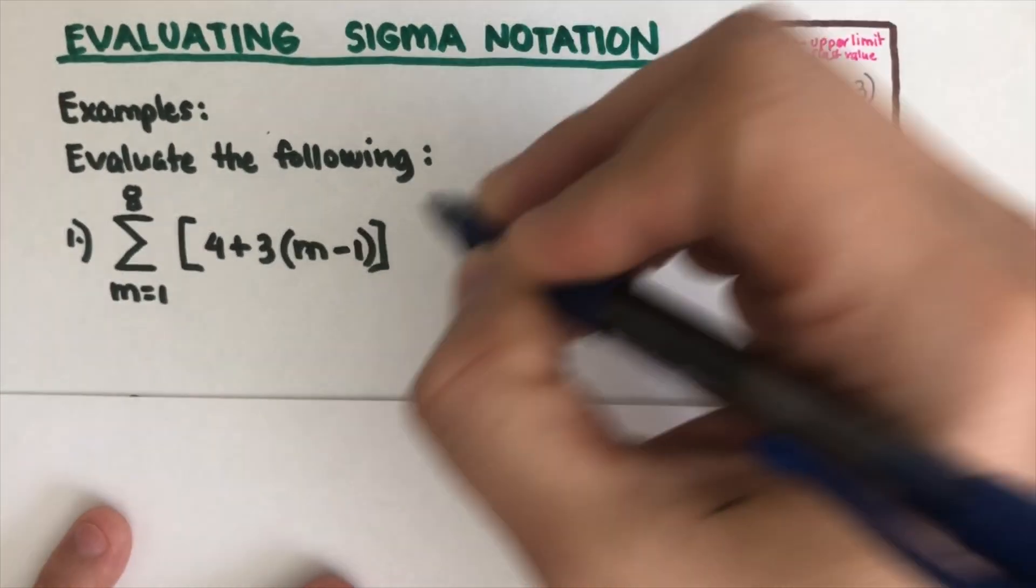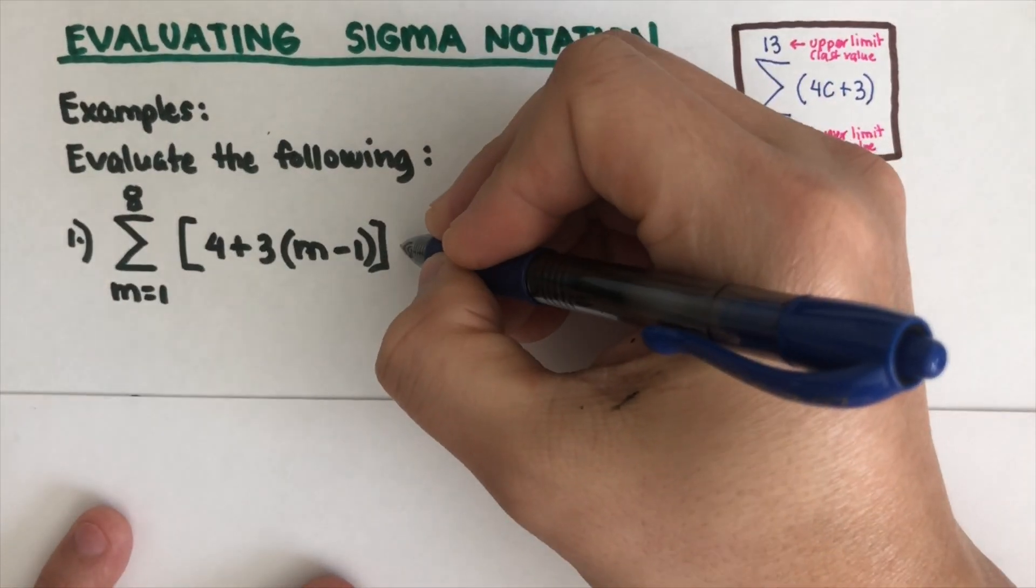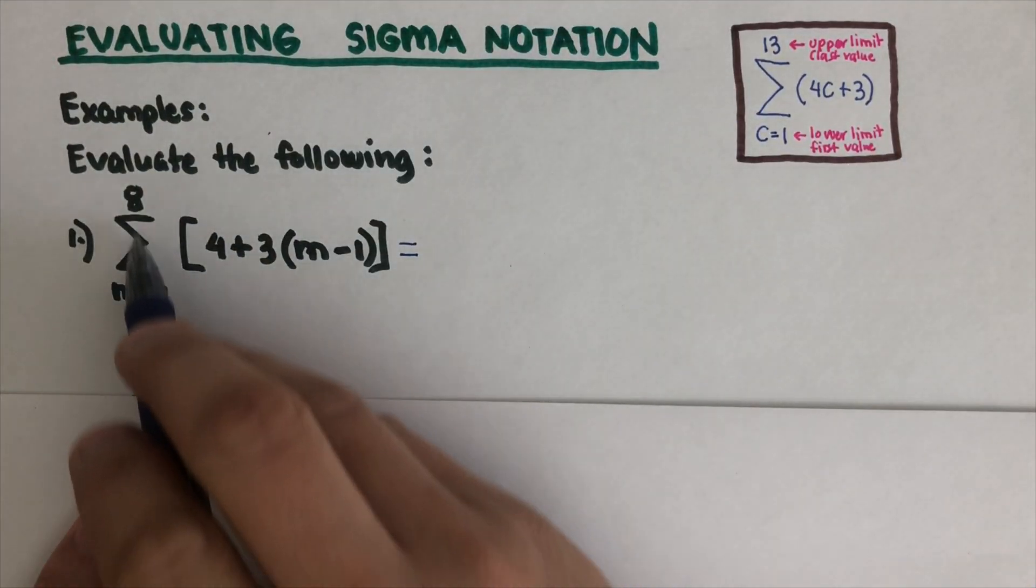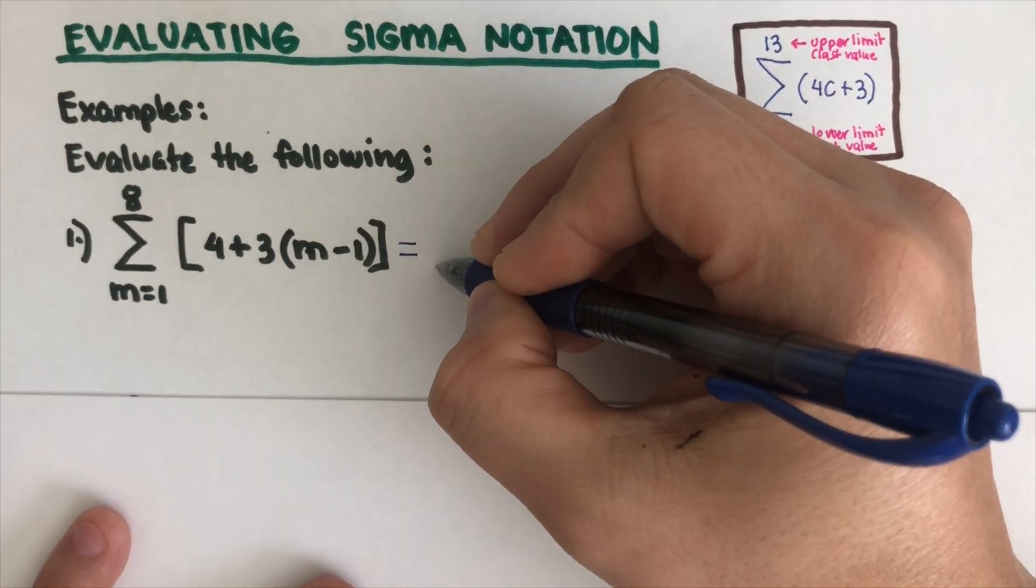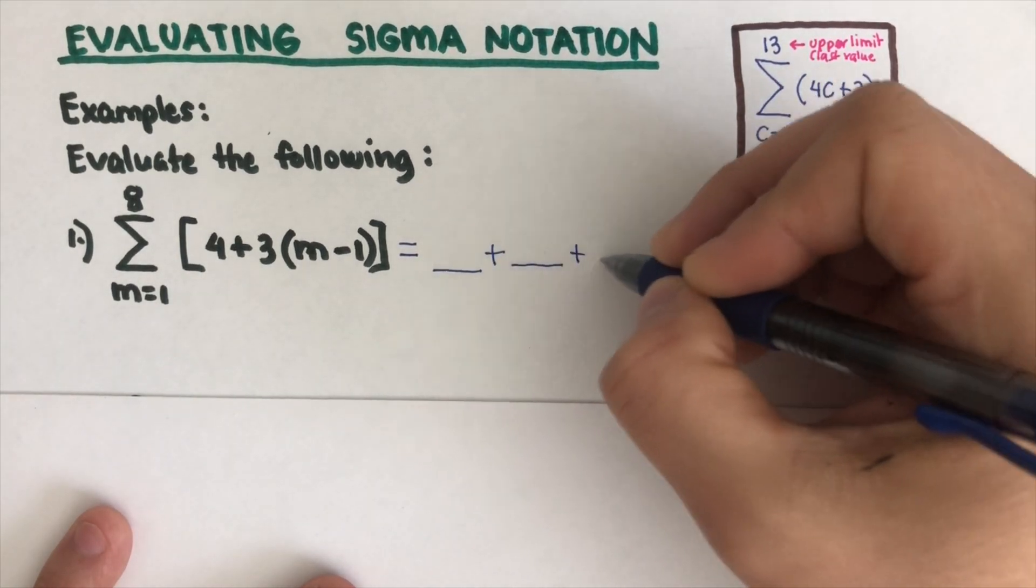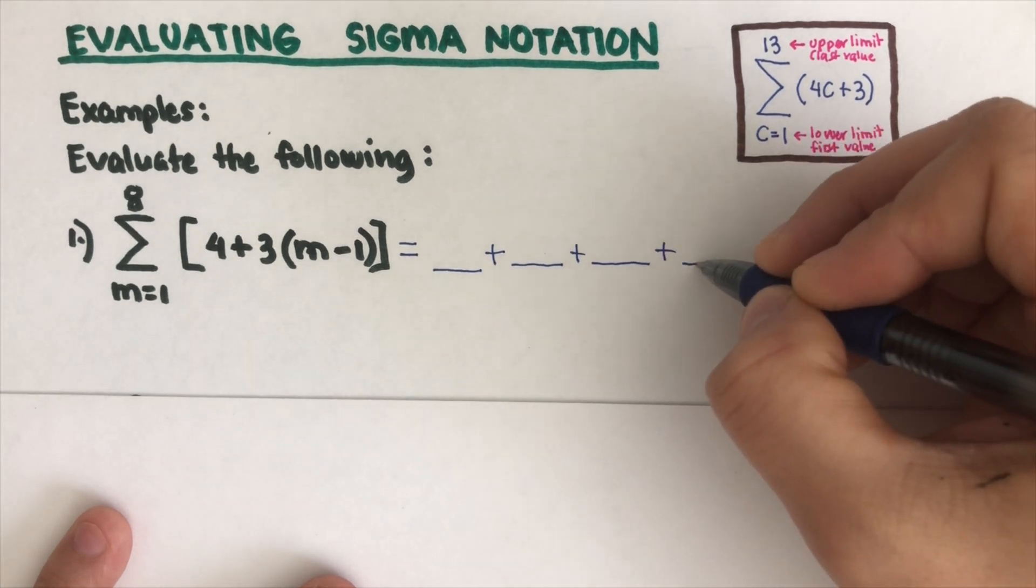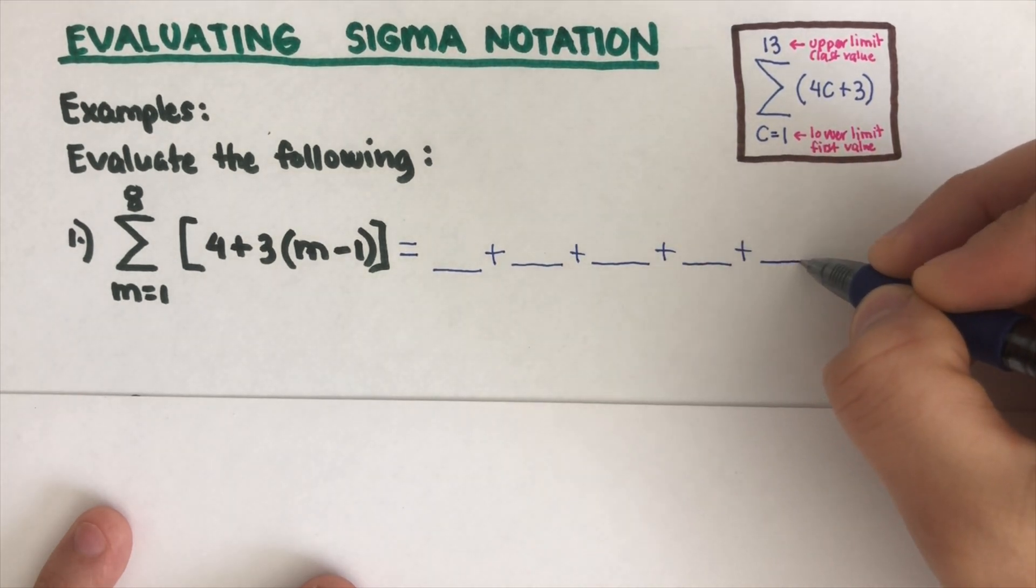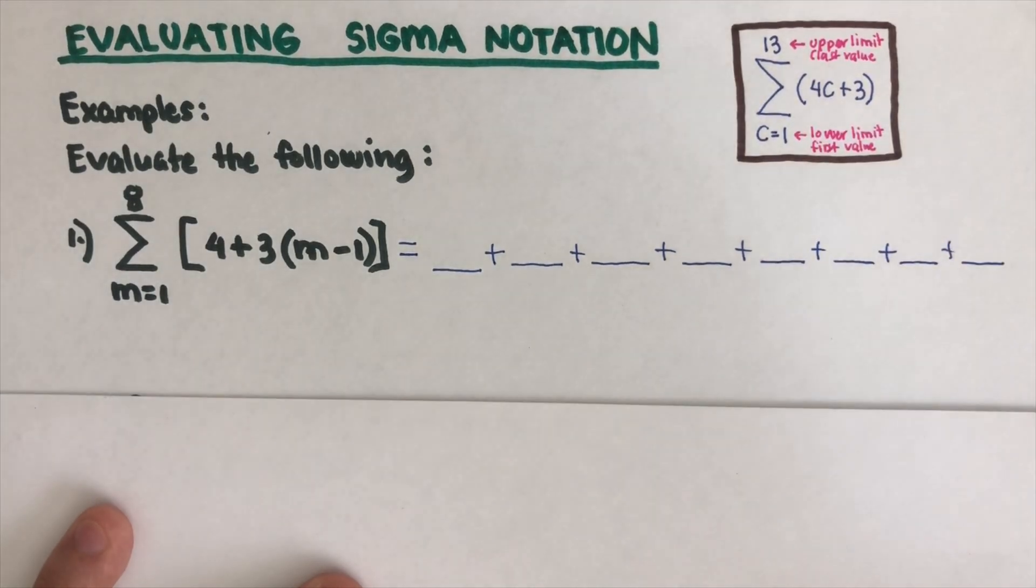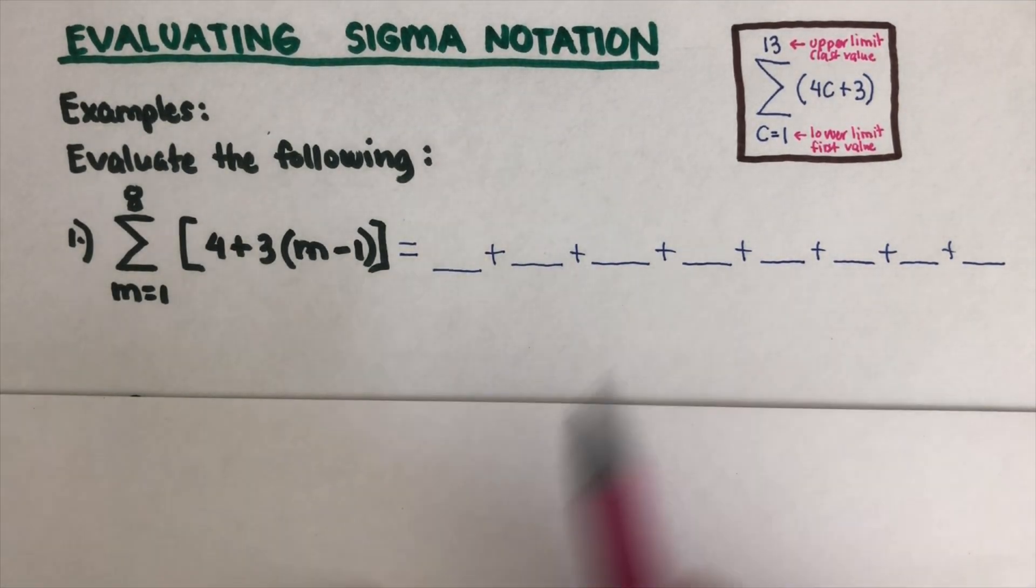To make this more visual, we will put some blanks here. It says that there are eight terms, so I'm going to go ahead and write eight terms here: one first term, two, three, four, five, six, seven, eight.